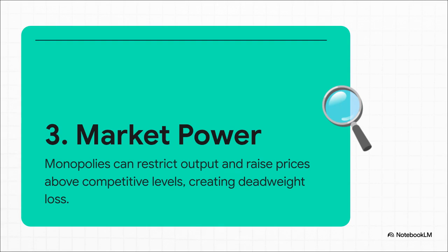Our third glitch is market power. This is what happens when one company, or maybe a tiny group of them, gets way too much control. Think of a monopoly — suddenly our efficient market robot isn't working for everyone anymore, it's just working for the monopolist. And what does that mean for us? Higher prices and less output than what society really wants.